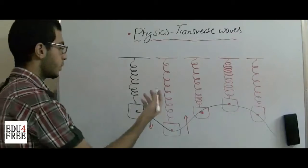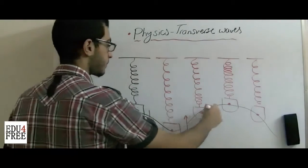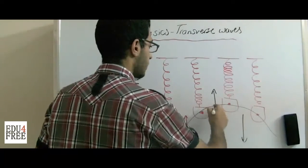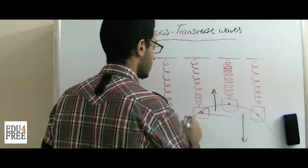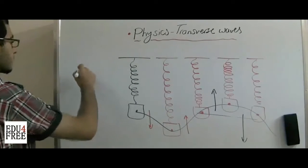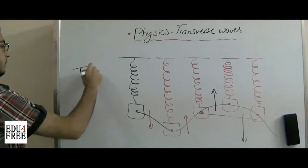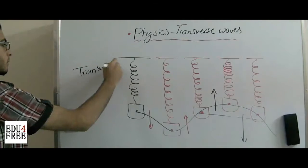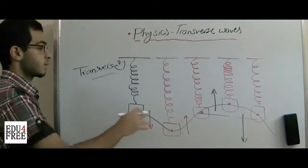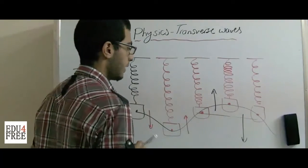Why is this called a transverse wave? This is called a transverse wave because the body moves up and down from its equilibrium position. As we can see here, it moves transversally.